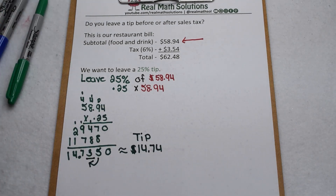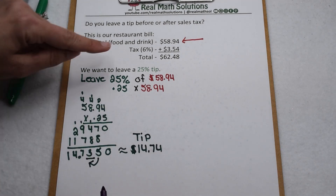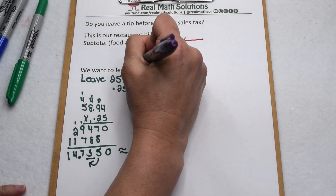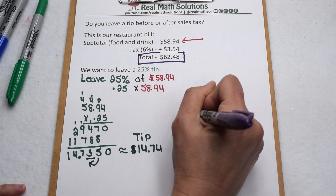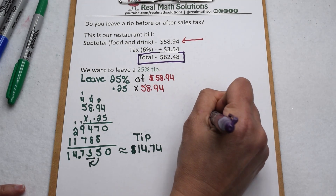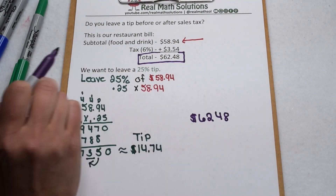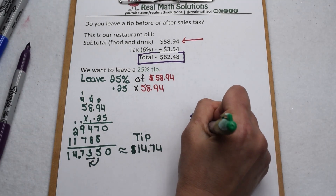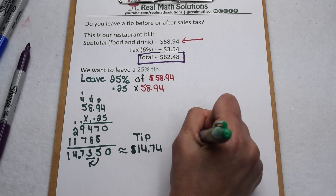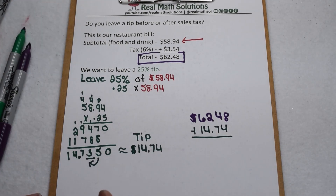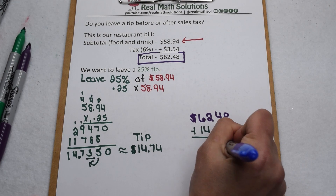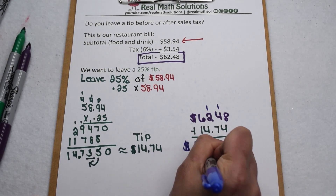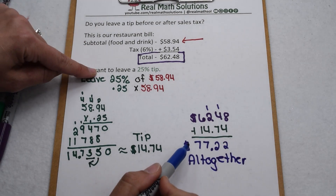So how much is it going to cost us to get out of this restaurant? We still have to pay for our food, drink, and tax, so we use that $62.48 to cover those expenses. Then we add our server's tip of $14.74. So altogether, we're going to have to pay a total of $77.22 to cover food and drink, tax, and tip.